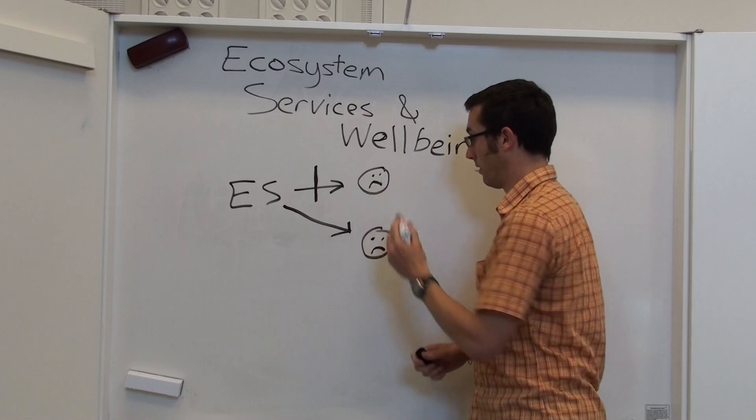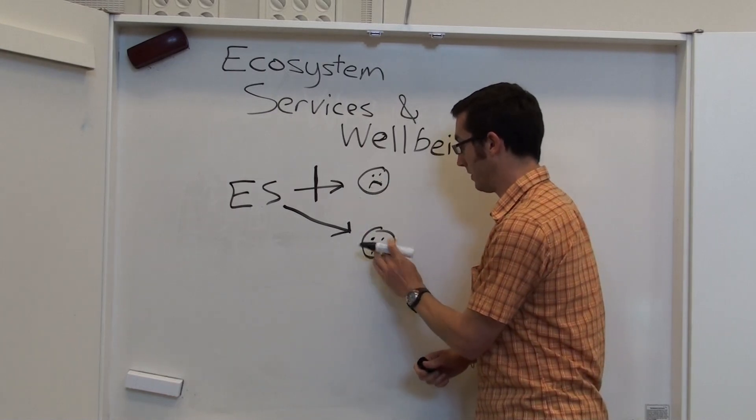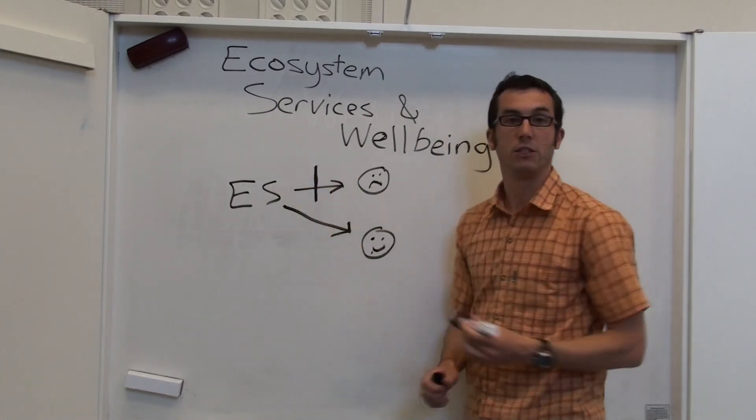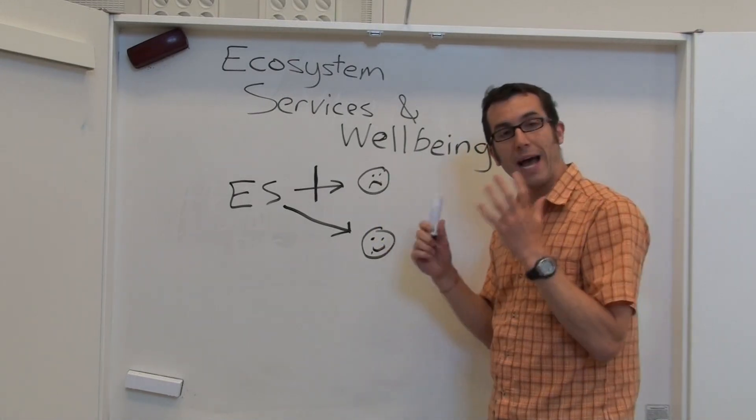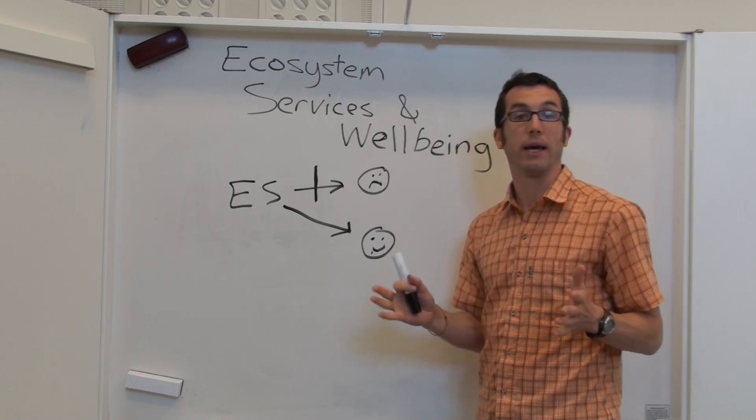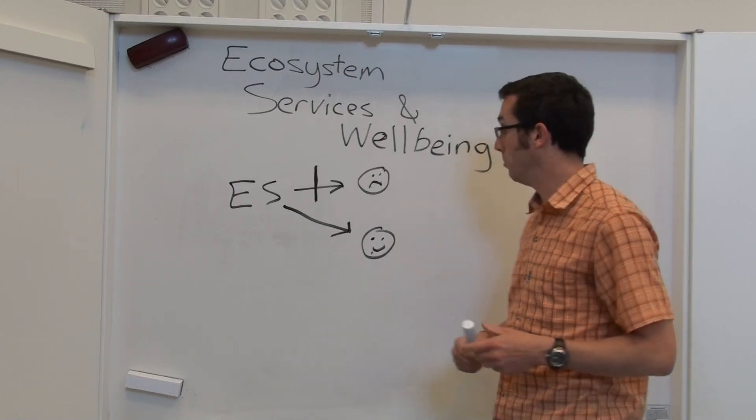this person is going to lose out from the benefits of this ecosystem service, and it doesn't matter how much fish is produced by this ecosystem, this person's well-being is not going to be improved. So access is a key aspect of how ecosystem services contribute to human well-being.